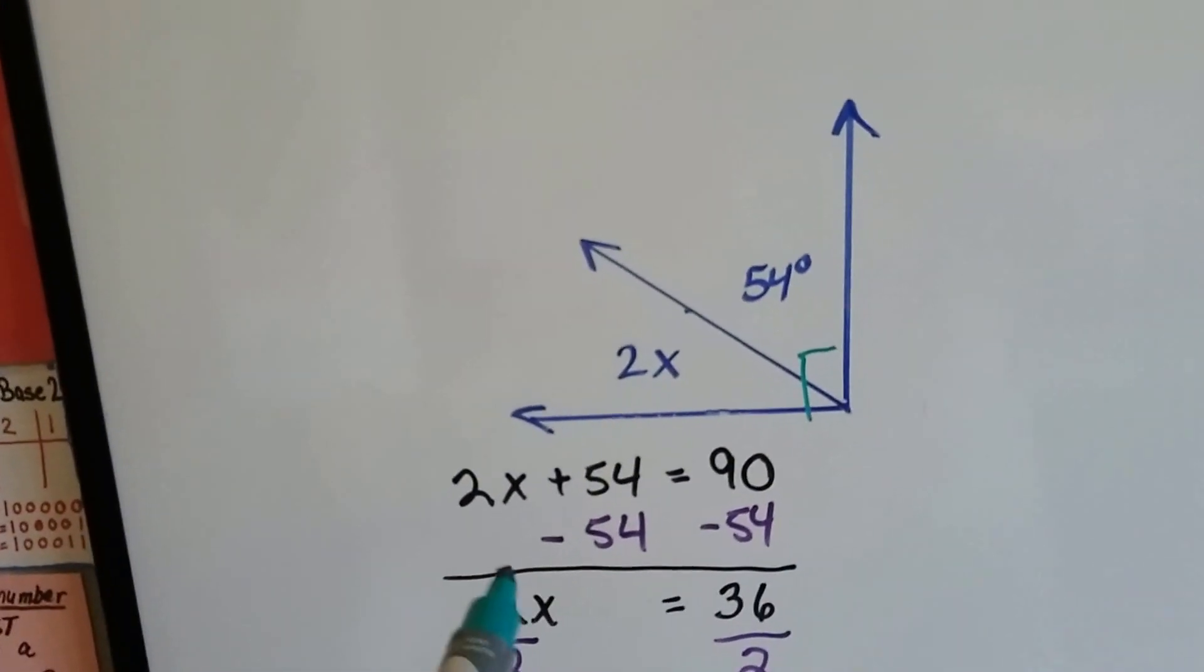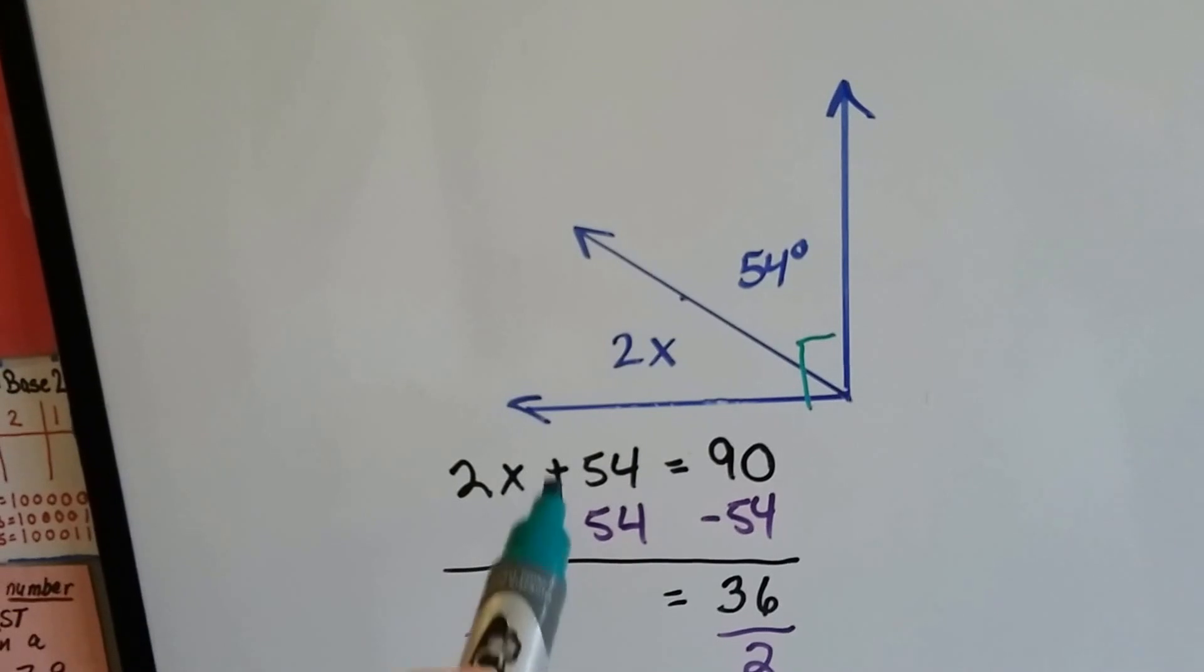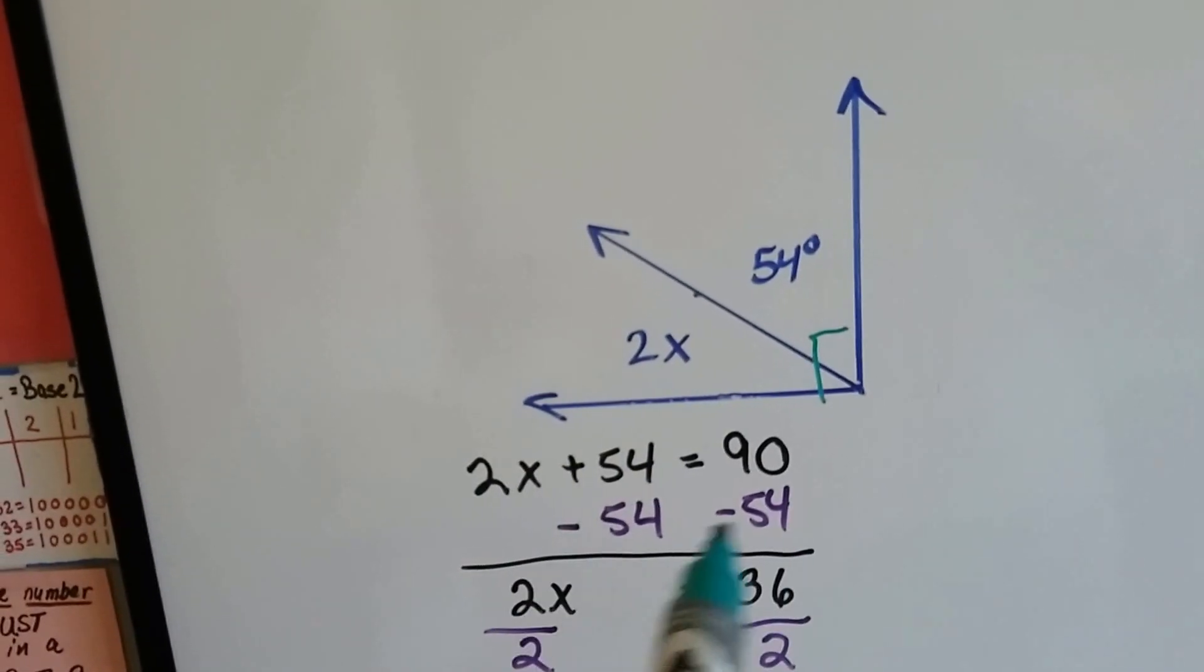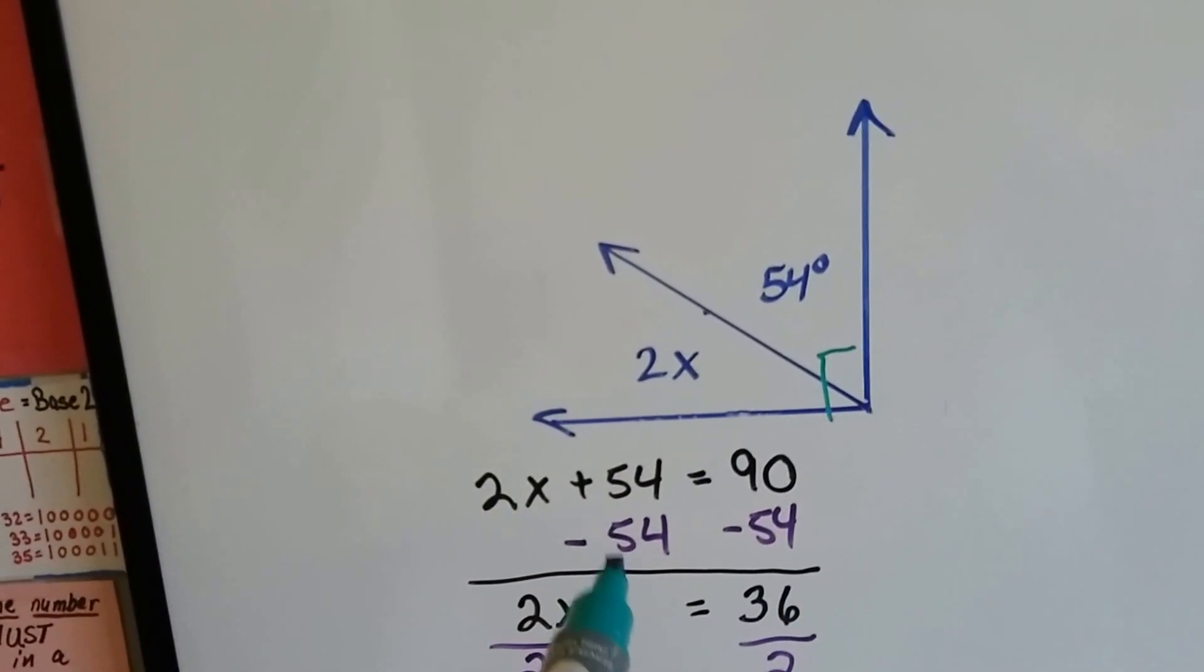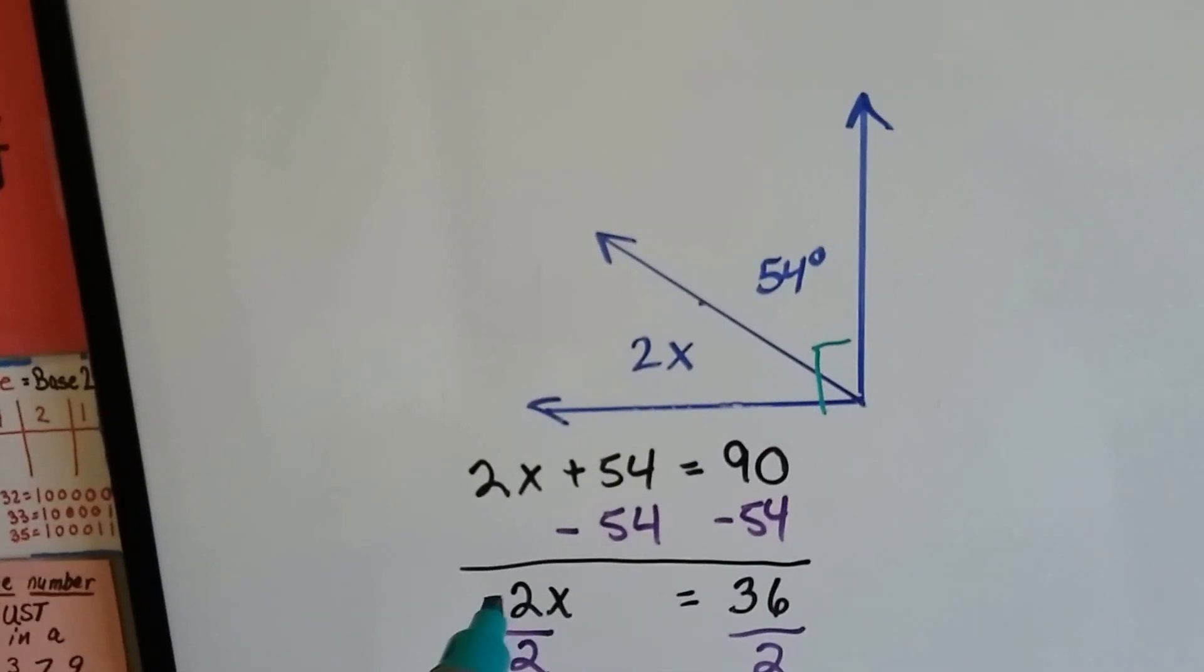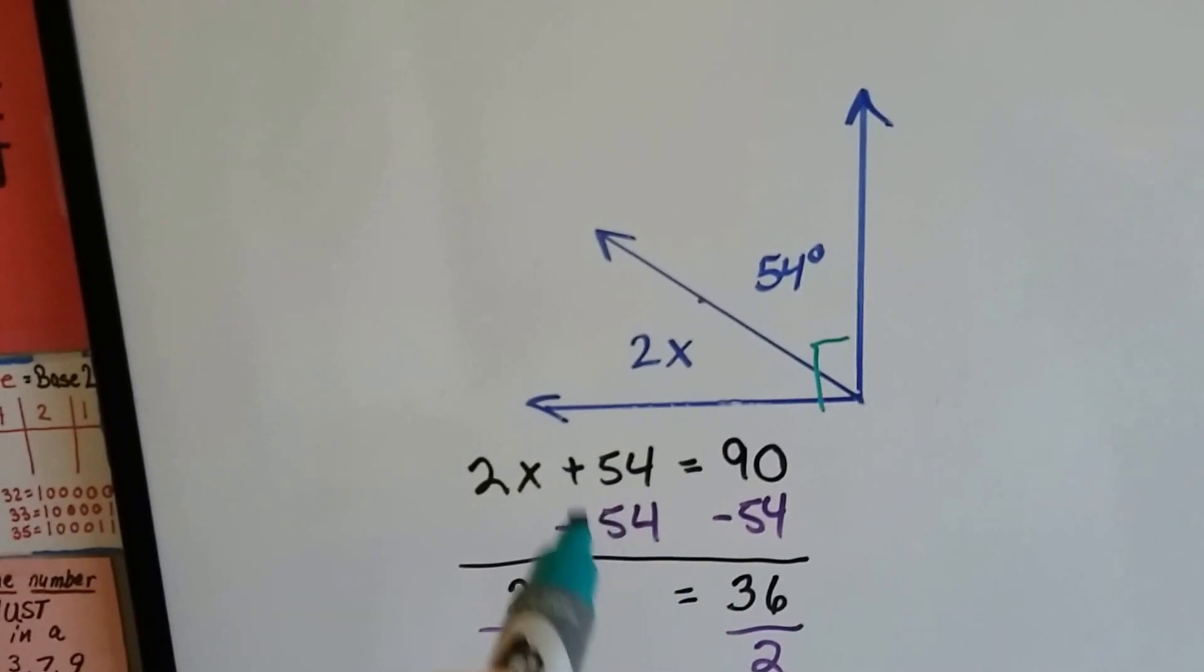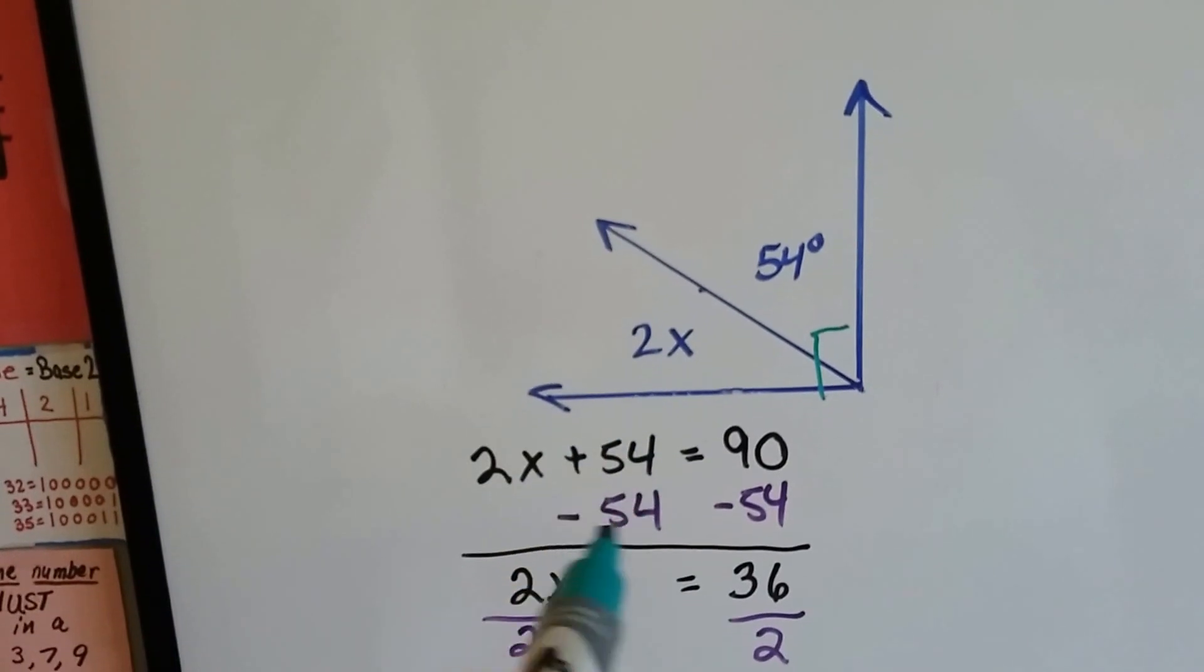So with inverse operations to solve the inequality, we remove the positive 54, the plus 54, from each side. That's the addition property of inequalities and subtraction properties of inequalities. Remember we did that a couple videos ago? So now we're left with 2x is equal to 36 because these cancel each other out. They're zero pairs.